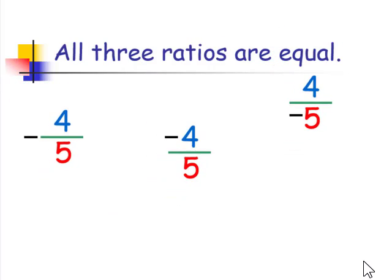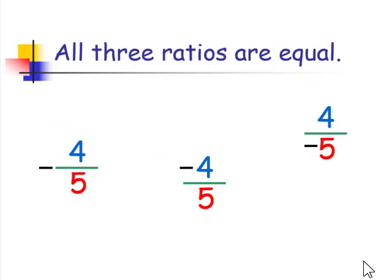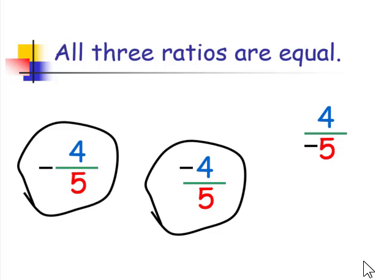Remember, all three of these ratios are equal. It doesn't matter if the negative is to the side, on the numerator, or the denominator — all three are the same. We read the first one as negative 4 fifths, the second as negative 4 over 5, and the third as 4 over negative 5. But remember, they all have the same value.